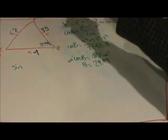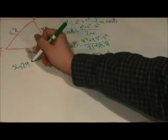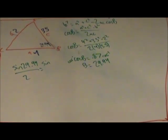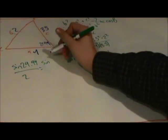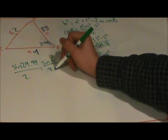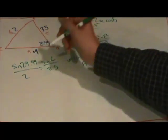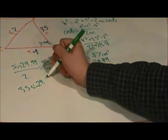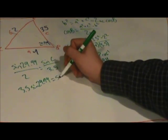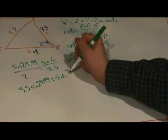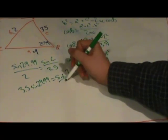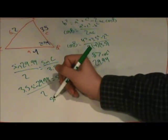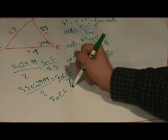So to solve for this, we do sine of 29.94 over 2 equals the sine of c over 3.5. So to cross multiply, we get 3.5 times sine of 29.94 equals sine of c times 2. We'll divide each side by 2 to get rid of that. And we'll get the sine of c to equal 0.87.